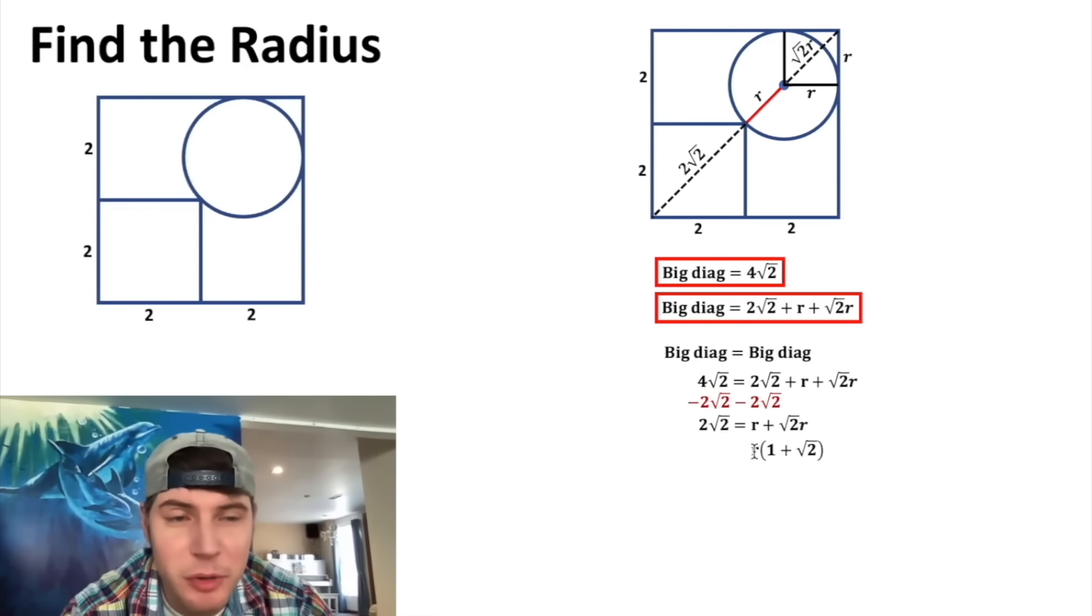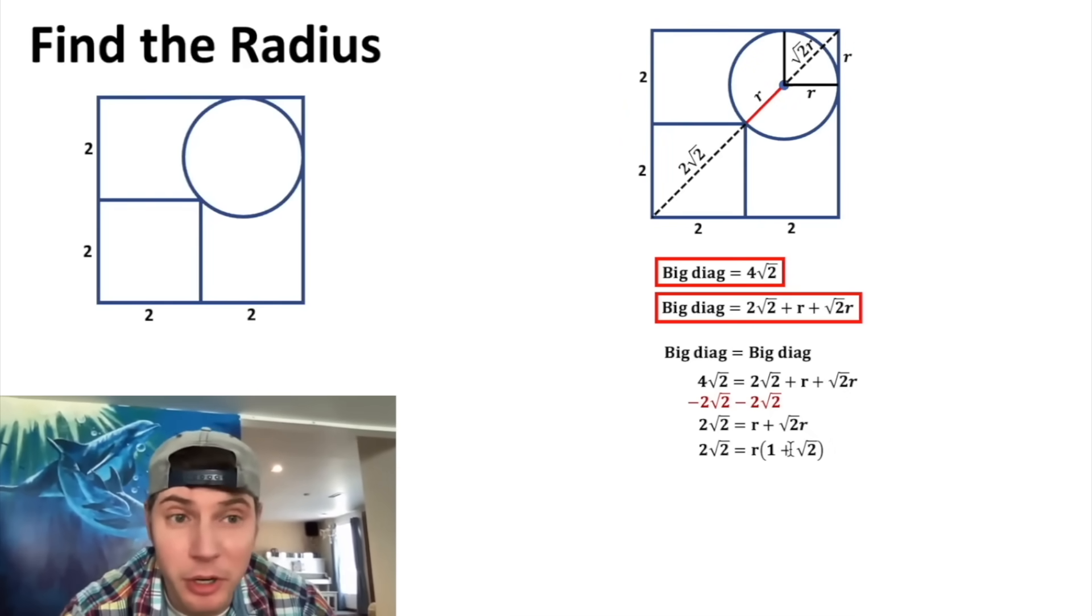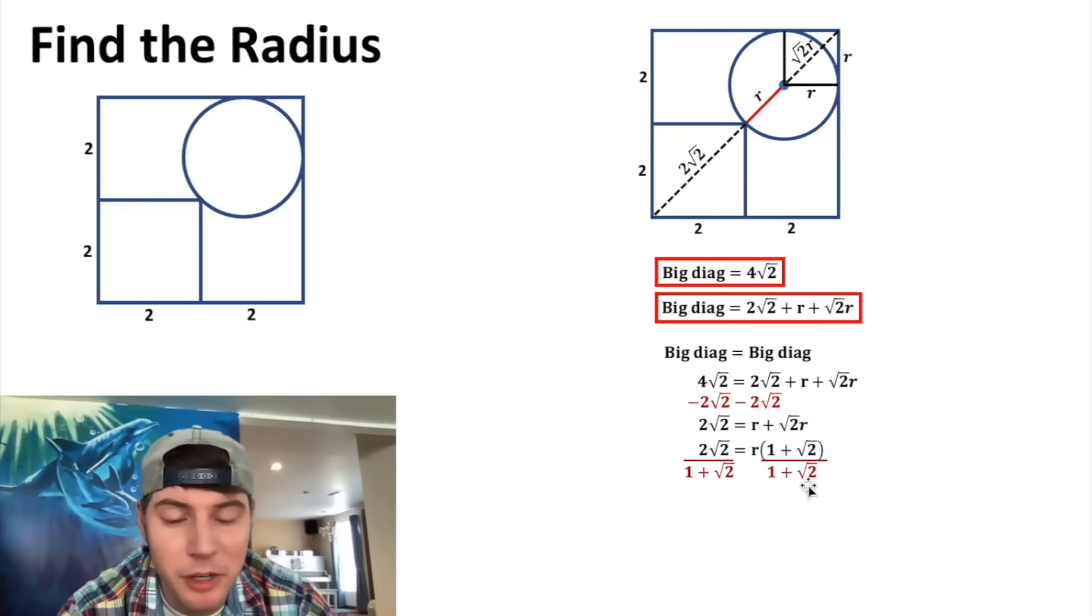So if you imagine distributing this, it would bring us back to where we were up here, so we factored out the r. Then on the left hand side, leave that as 2√2. The 1 + √2 is just a number, so we can divide both sides by that number, and we end up with r being equal to 2√2 over 1 + √2.